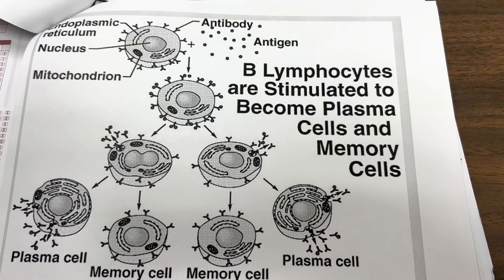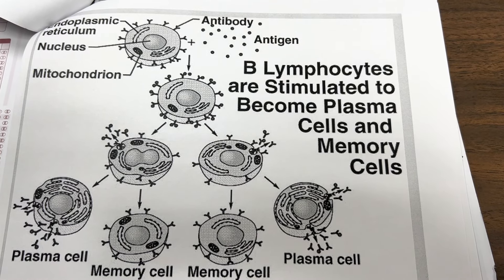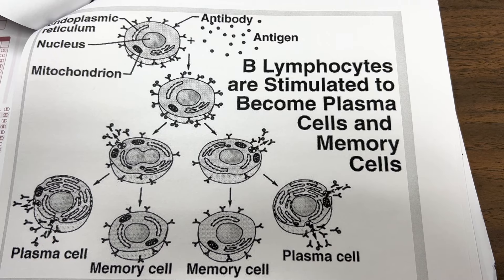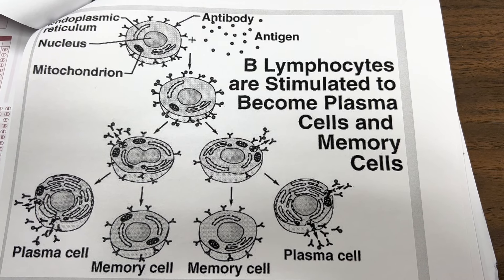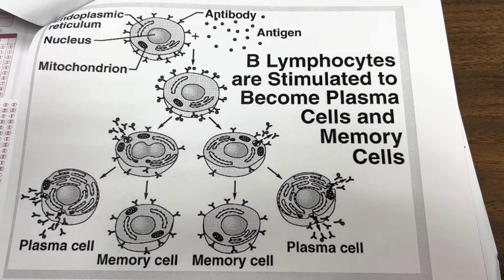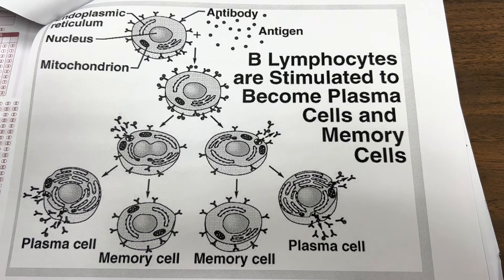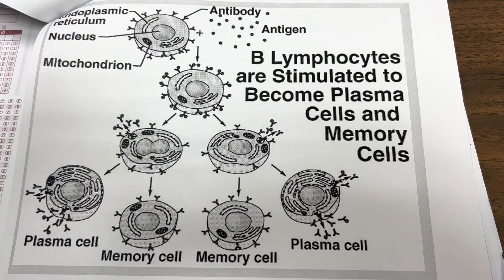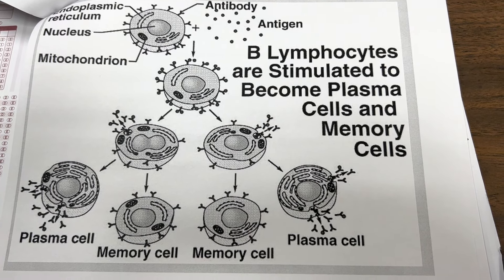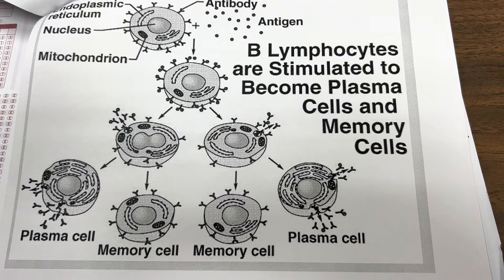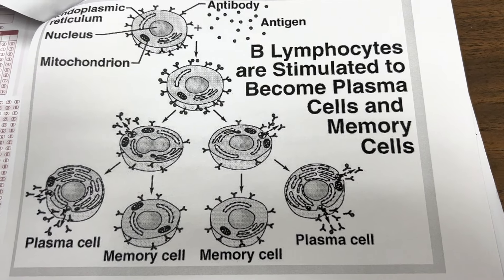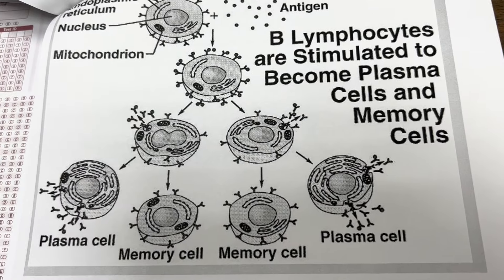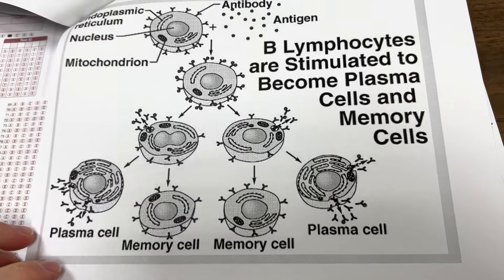B lymphocytes are stimulated to become plasma cells and memory cells. The plasma cells are active in the flow, while the memory cells hang out outside the flow for future use.